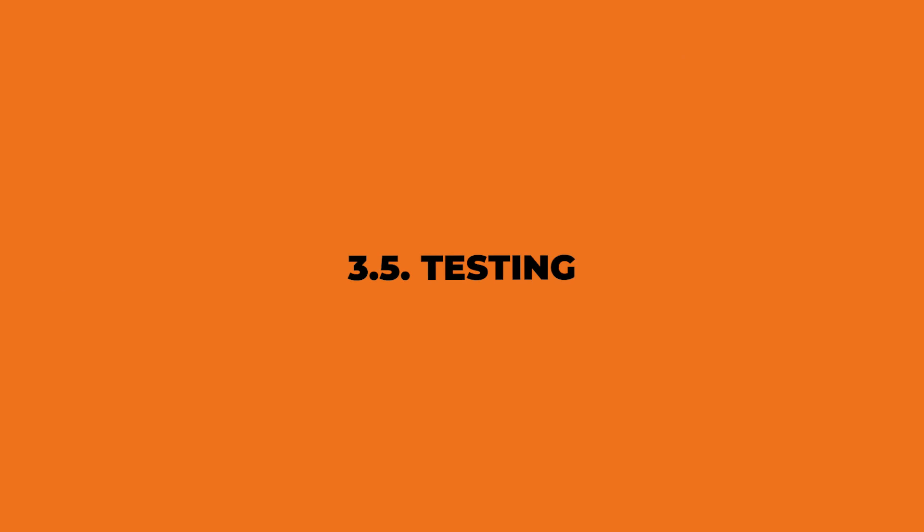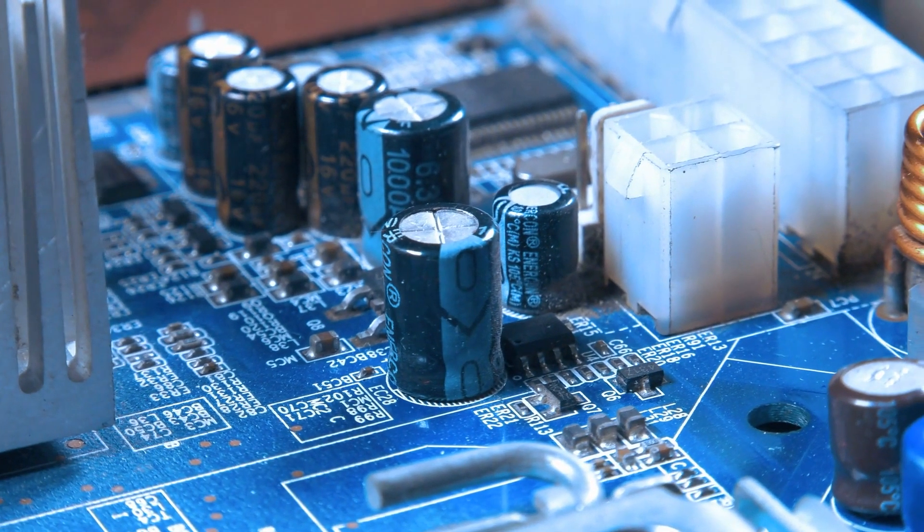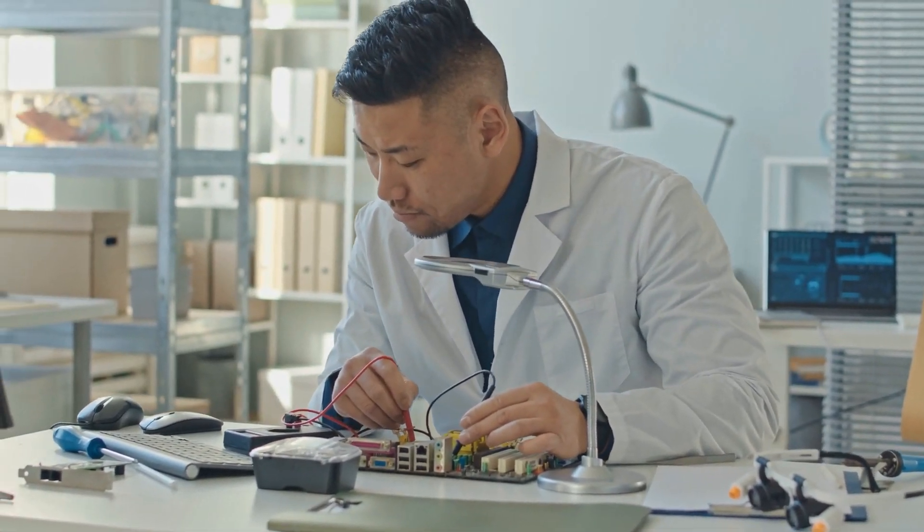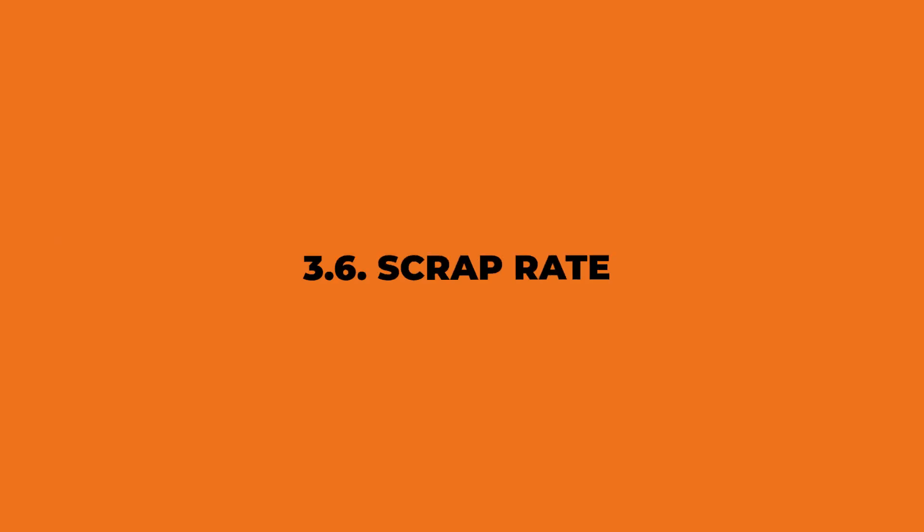The next cost is testing. Once the final product has been assembled, it needs to be tested to confirm it is fully functional and meets all quality specifications. Some testing of the electronics may also be done before final assembly to prevent wasting the cost of assembly on a unit that has problems. The next component is the scrap rate — no manufacturing process is ever perfect and you are guaranteed to have some faulty units. Initially this may be as high as 10% or more, but as you optimize your manufacturing process you should be able to reduce this to maybe one to three percent.